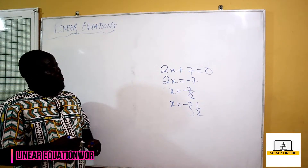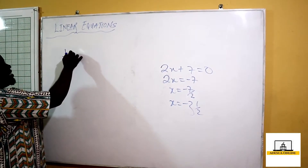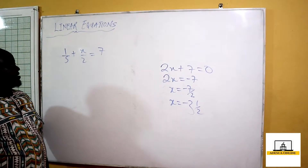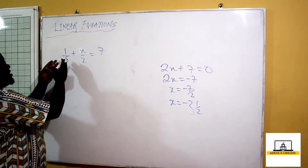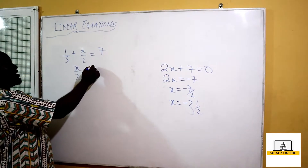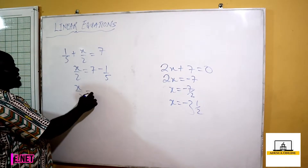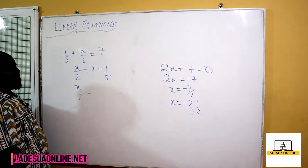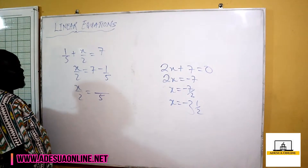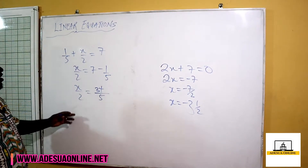We can also have a fraction. For example: 1 over 5 plus x over 2 equals 7. We are asked to solve for x. Since 1 over 5 is a constant, we take it to the right: x over 2 equals 7 minus 1 over 5. Using an LCM of 5, that gives us 35 minus 1 over 5, which equals 34 over 5.